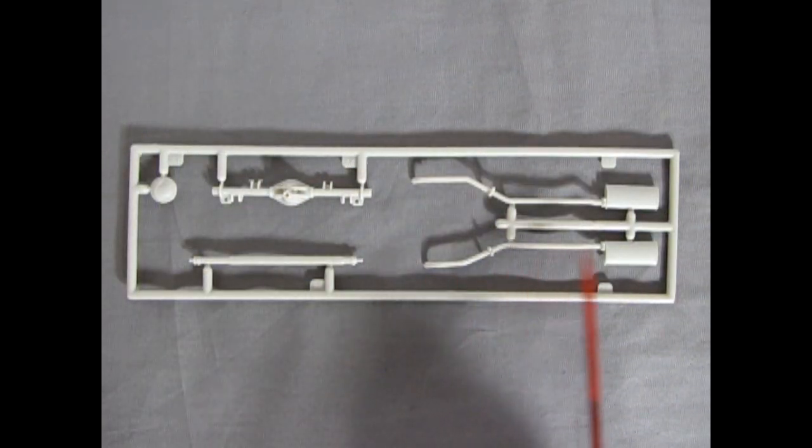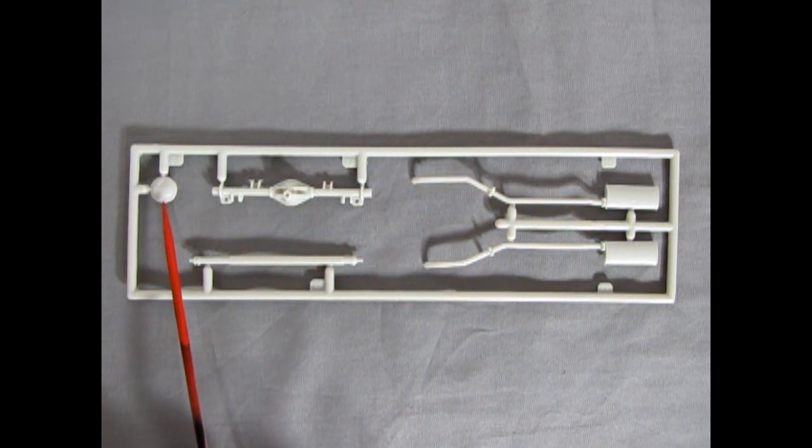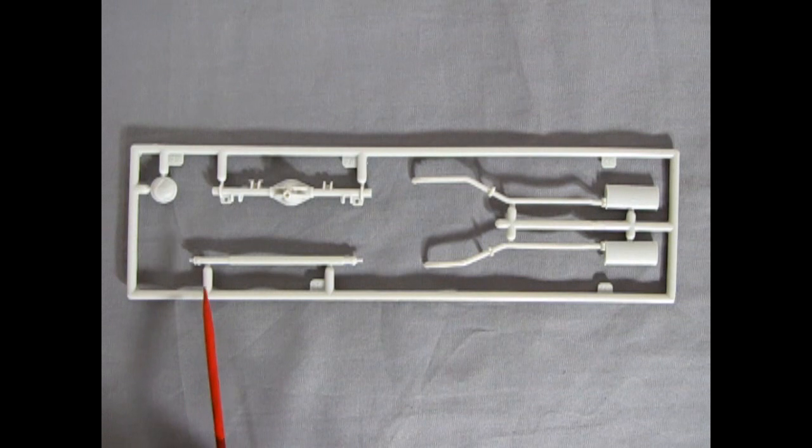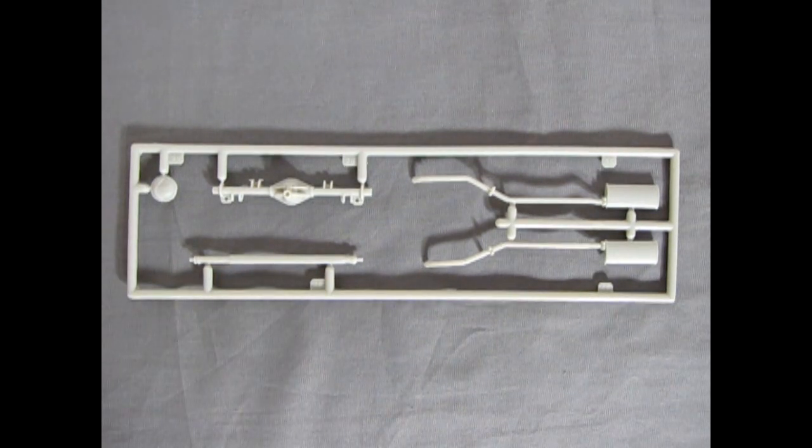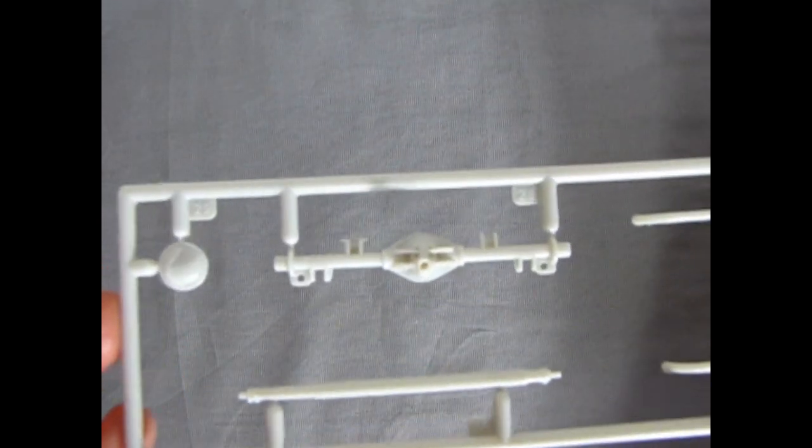Next up, we have the front exhaust pipes. We also have the rear differential and the differential cover and the drive shaft. So I kind of forgot to bring up the parts to the camera on the last sprue. So we just take a quick look here.